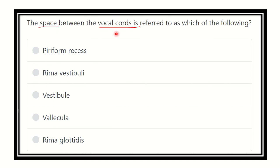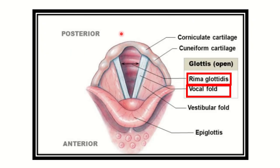First, let's look at the larynx and its different parts. Here we can see the epiglottis, and on either side we can see the vestibular fold. Then we can see the vocal fold, and the area between the vocal folds is the rima glottis.